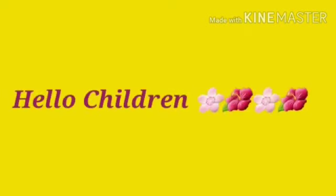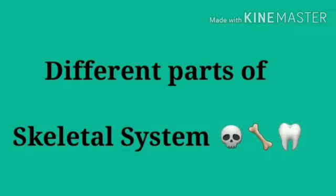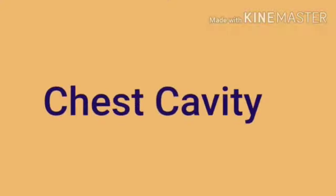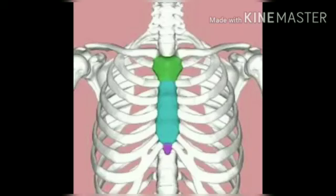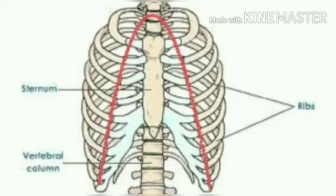Hello children, now be more active because we are going to start the different parts of the skeletal system. Let us first start with the chest cavity. Here you can see the type of chest cavity we have in our body. There are 12 pairs of ribs on either side of the chest cavity.